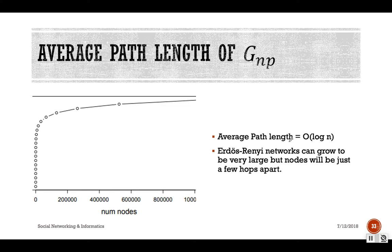For the average path length, it is of order O(log n). The interesting property of the random graph model is that even as it grows very large, the average path length remains a very small value — nodes are just a few hops apart. So the average path length of a random graph model is actually very small.